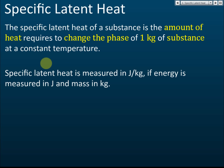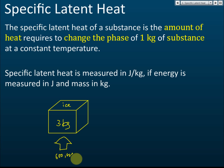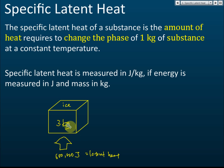For example, let's say we have a cube of ice with a mass of three kilograms. This three-kilogram ice cube needs 600,000 joules of heat energy to melt — to change state from solid to liquid. So the latent heat is 600,000 joules. That is the amount of thermal energy needed to change the state from solid to liquid. So the latent heat is 600,000 joules. Now, how about the specific latent heat?